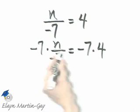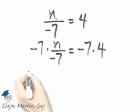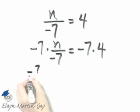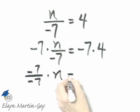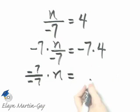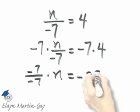Now this left side is the same as negative 7 over negative 7 times n, and of course the right side, negative 7 times 4, that's negative 28.